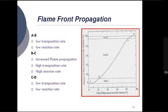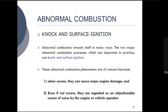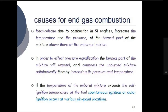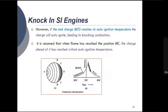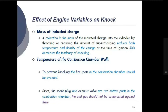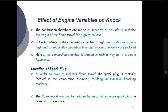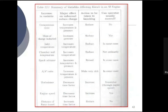We discussed flame front propagation and various factors that affect flame speed inside the cylinder. We also discussed abnormal combustion, known as knocking, and various factors that affect the knocking tendency in petrol engines — including time factors and density factors — and how engine size and combustion chamber shape affect the tendency to knock.